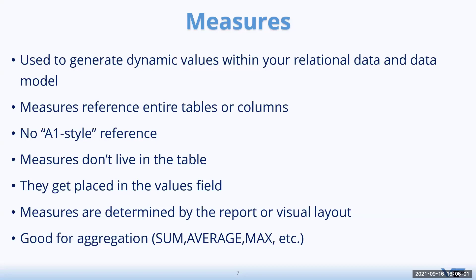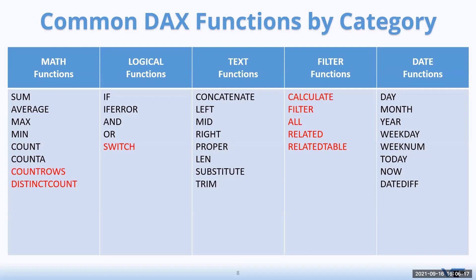When you hear DAX functions, you might think they are weird. Actually, most functions are similar to Excel. For example, in the math/operational functions, there is average, max, min, count, and countA — similar to Excel. What's new is COUNTROWS and DISTINCT COUNT. In logical functions, we see IF, IFERROR, AND, OR — similar to Excel. But additionally, there is something called SWITCH, which is new in DAX.